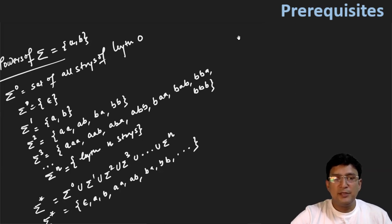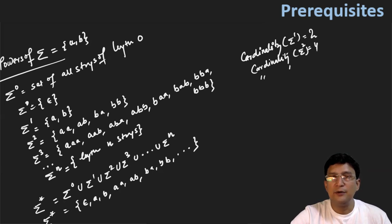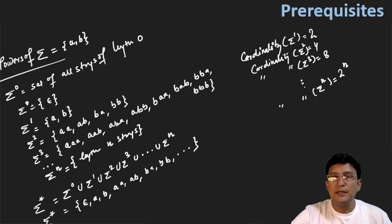One other thing that we have missed out is cardinality. So let us discuss about cardinality. The cardinality of any set is equal to the number of elements that the set has. For example, the cardinality of sigma power one will be two because it has two elements. Similarly, the cardinality of sigma power two will be four. The cardinality of sigma power three will be equal to eight. So if I talk about the cardinality of sigma power n, it will be equal to two raised to the power n.